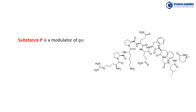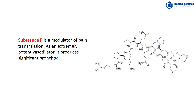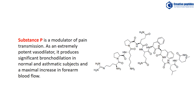Substance P is a modulator of pain transmission. As an extremely potent vasodilator, it produces significant bronchodilation in normal and asthmatic subjects and a maximal increase in forearm blood flow.